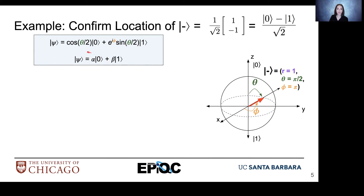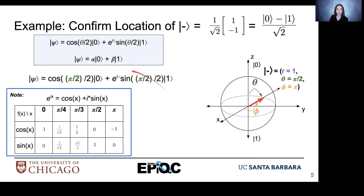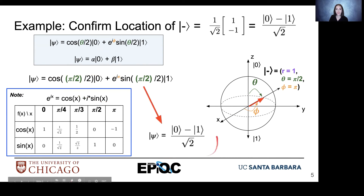Let's think about what we would plug in for theta and phi. Starting with theta, we see that we have a rotation of π/2, and then for phi we have a rotation of π. Remember, theta is the angle away from the positive z-axis and phi is the angle away from the positive x-axis. Plugging those values into our equation and applying our trigonometric identities, we end up getting the minus state — our qubit state is equal to the minus state once we solve this equation.